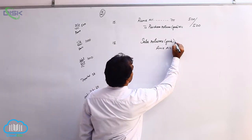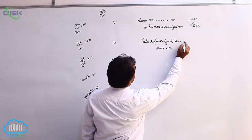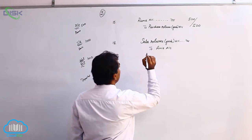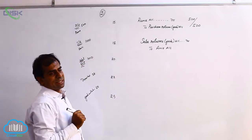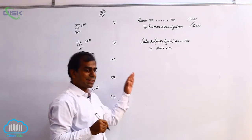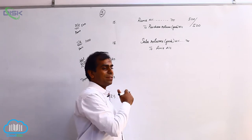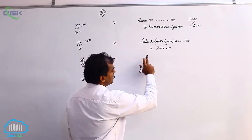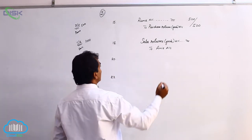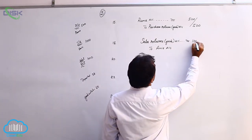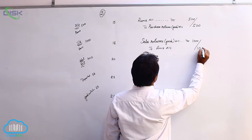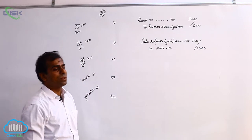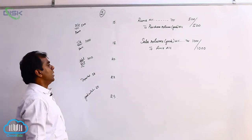We debit the sales returns account. We credit Amir's account because Amir is identified as a personal account, and Amir is giving back the goods to us — so the personal account rule says credit the giver. To Amir, the amount being 1000. Narration: being goods returned by Amir.